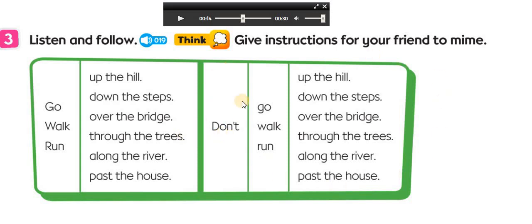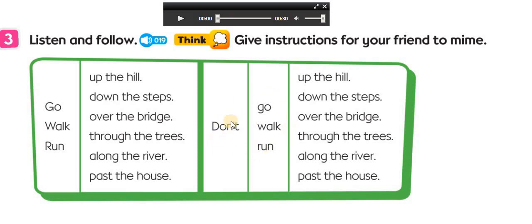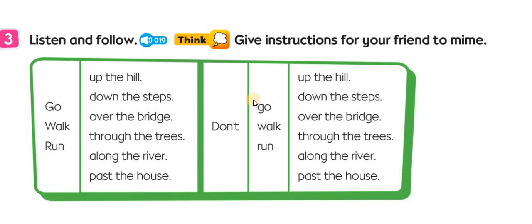Now let's look at the negative words — they tell us not to do things. Don't run down the steps. Don't walk along the river. Don't go through the trees. You can also say: don't go up the hill, don't walk up the hill, don't run up the hill; or don't go past the house, don't walk past the house, don't run past the house.